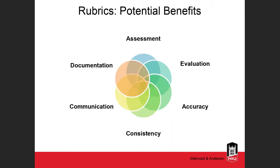Here are some potential benefits of rubrics. They assess complex and subjective criteria and make that assessment a little more objective. They evaluate performance and provide for precise, more accurate judgment. They provide a common format for stating criteria and standards. They inform students of the criteria on which they'll be graded and how they can succeed. And they document and communicate the grading process to students.